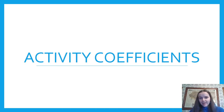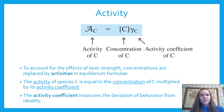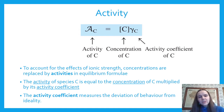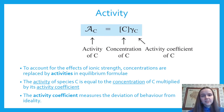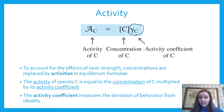Now we need to figure out how to deal with the math: what is activity, and what are activity coefficients? Activity, written as a big script A for a particular analyte C, is equal to the concentration — the actual number of molecules per volume — times the activity coefficient, abbreviated gamma. We replace concentration with activity to account for ionic strength effects, and gamma measures how much a particular situation deviates from ideal behavior, where ideal behavior is just the concentration.